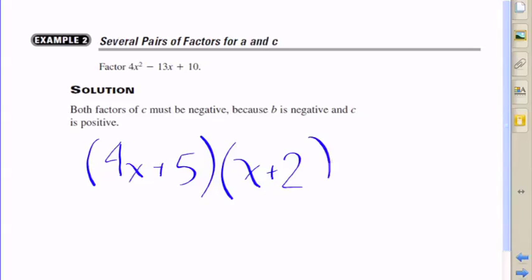So here's my two linear expressions that I'm saying I could factor from the 4x squared minus 13x plus 10. Let's see. 4x times x, 4x squared.